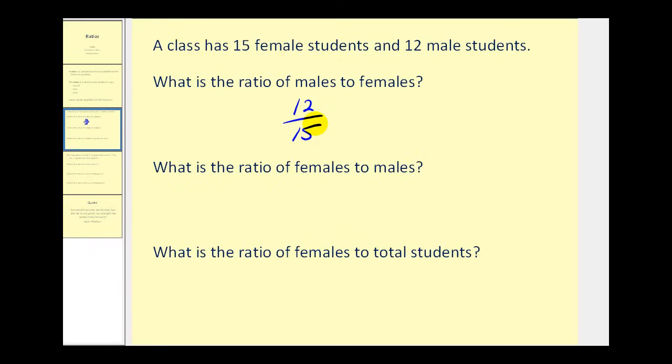Now as mentioned before, most of the time ratios are in simplest form. So we can simplify this just like we would simplify the fraction 12 fifteenths. Since 12 is 3 times 4 and 15 is 3 times 5, we can see they have a common factor of 3. So the simplified ratio would be 4 to 5.